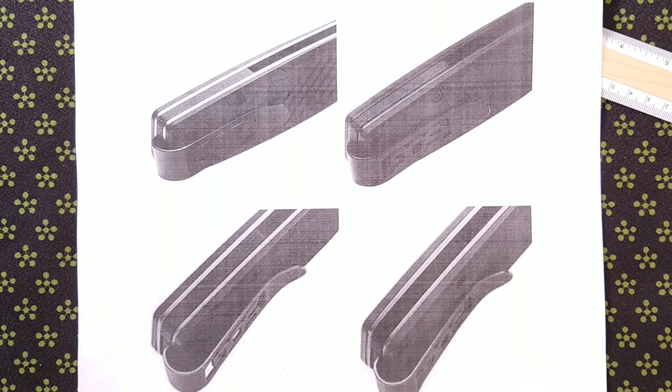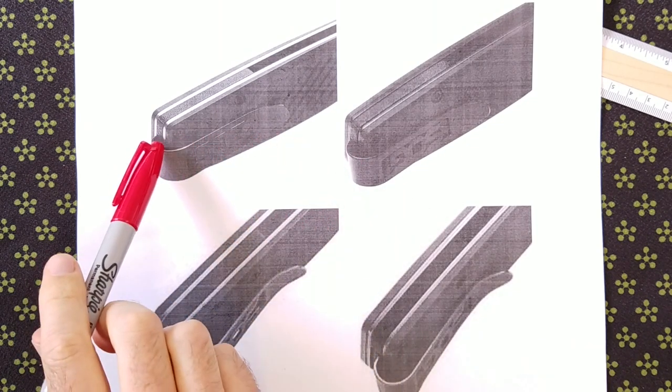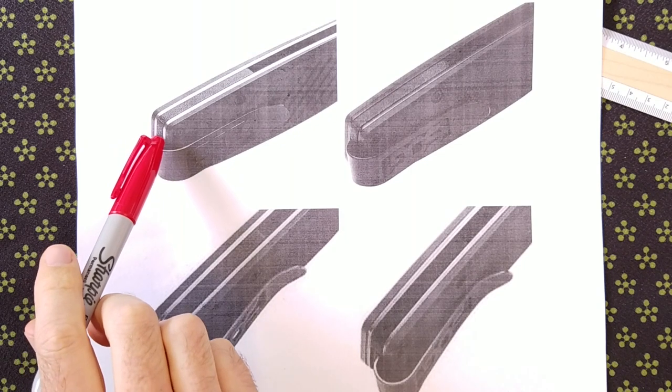Also note that improper assembly affects two issues. One is that it traps fabric in your pocket behind the pocket clip, making removal of the knife from your pocket extremely difficult.